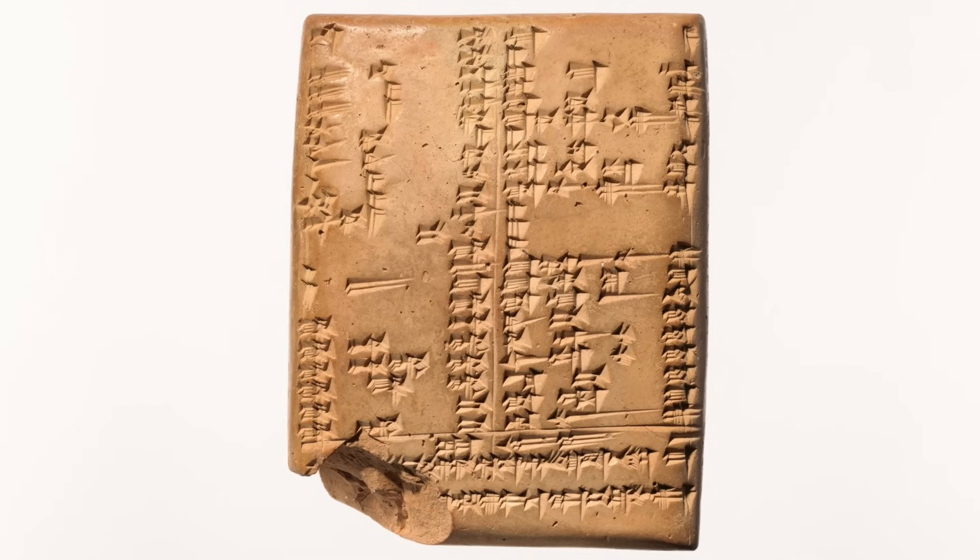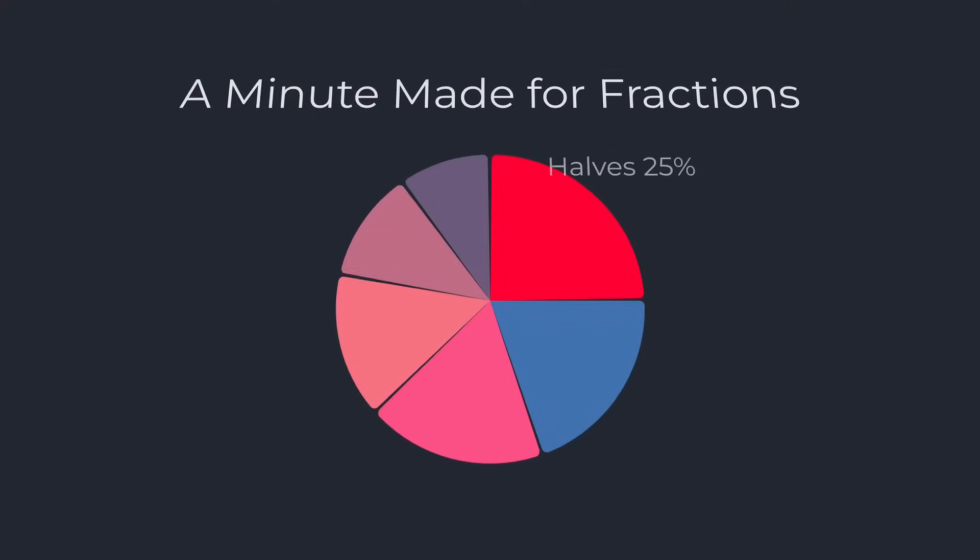60 seconds in a minute sounds like a fact of nature, but who actually decided it? The answer ties every watch on your wrist to a 4,000-year-old Babylonian trick, choosing the number 60 for its uncanny ability to slice a day into easy, everyday fractions.